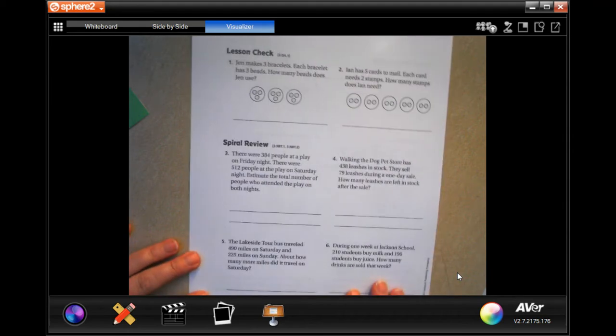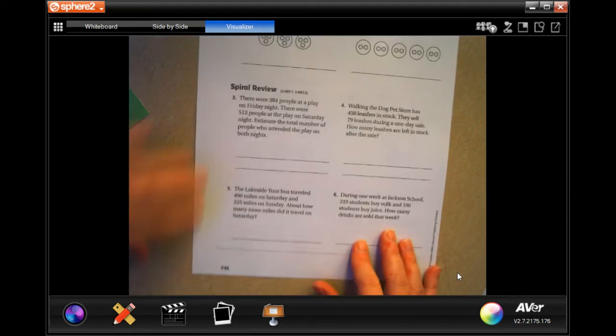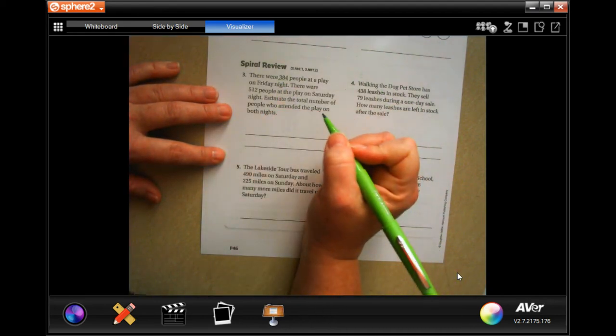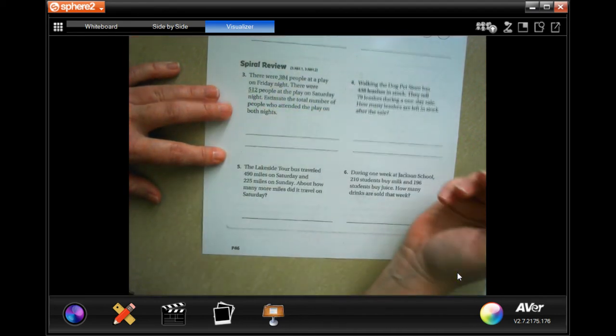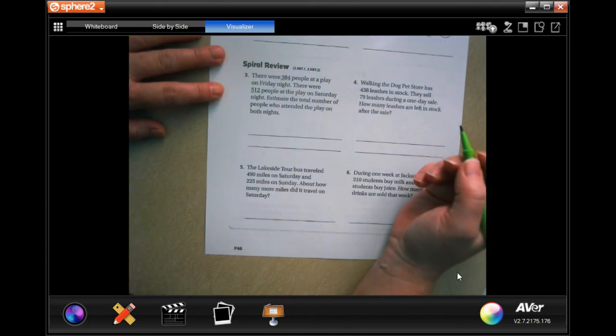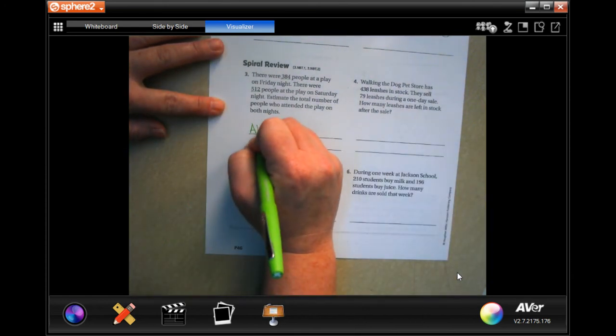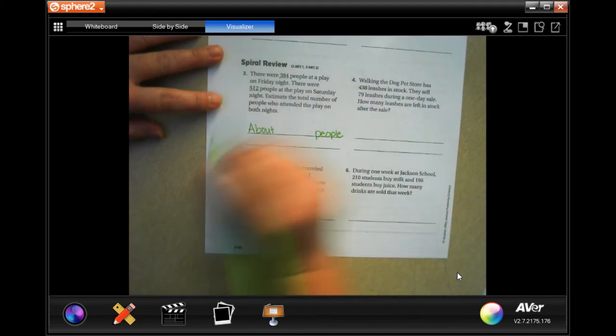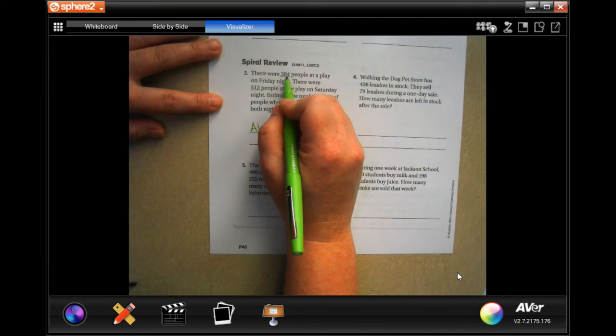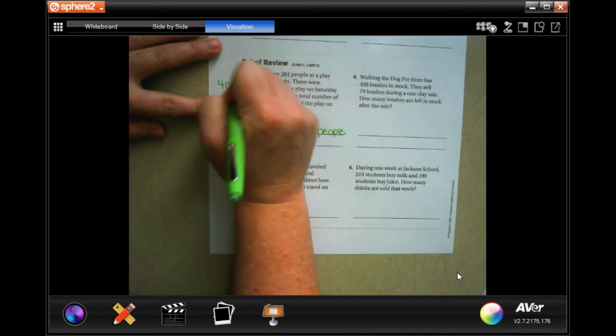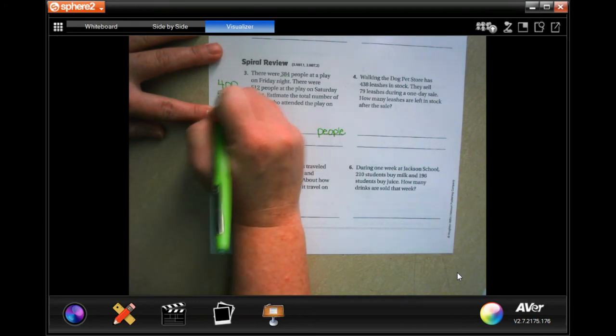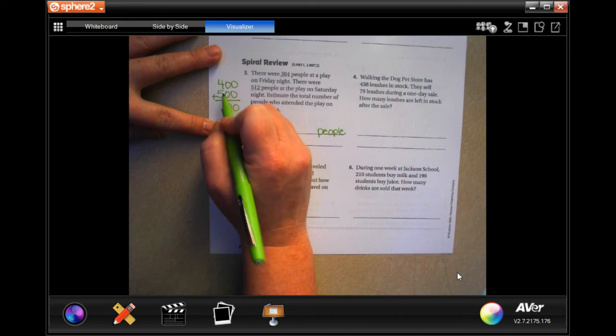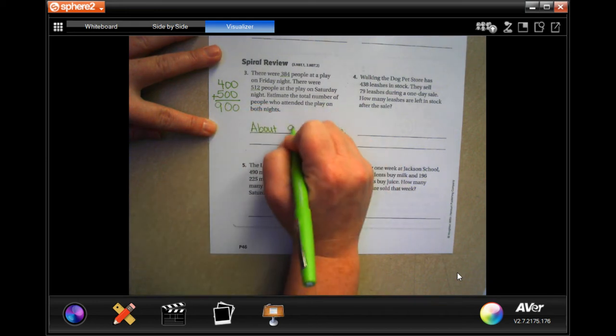We're going to go over onto the back where you guys are going to do the lesson check, just like always. And we're going to go ahead and do this final review. It says there are 384 people at a play on Friday night. There are 512 people at a play on Saturday night. Estimate the total number. So we're going to estimate. 384 would round to 400. 512 would probably round to 500. I'm going to add those up and zero is zero, and then four plus five is nine. So about 900 people.